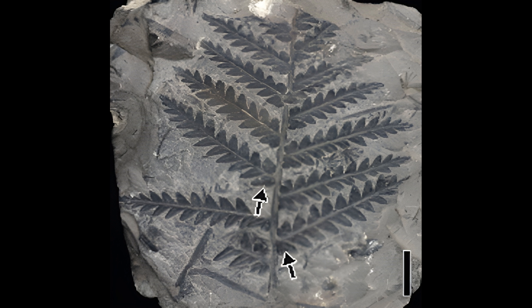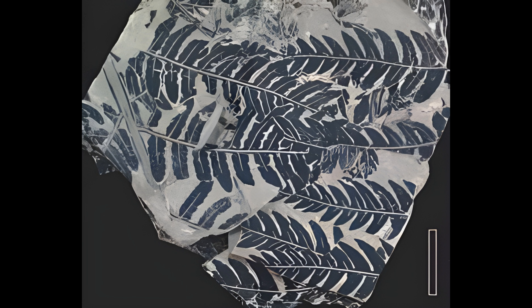Since leaves are basically flat, the resulting distortion is minimal. Plant stems and other three-dimensional plant structures do not preserve as well under compression. Typically, only the basic outline and surface features are preserved in compression fossils.